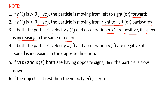Condition 4: if velocity v(t) and acceleration a(t) are both negative, then we say that the particle speed is increasing but in the opposite direction. Case 5: if velocity and acceleration have opposite signs — for example, if velocity is positive and acceleration is negative, or if velocity is negative and acceleration is positive — when both have opposite signs, then we say that the particle is slowing down.